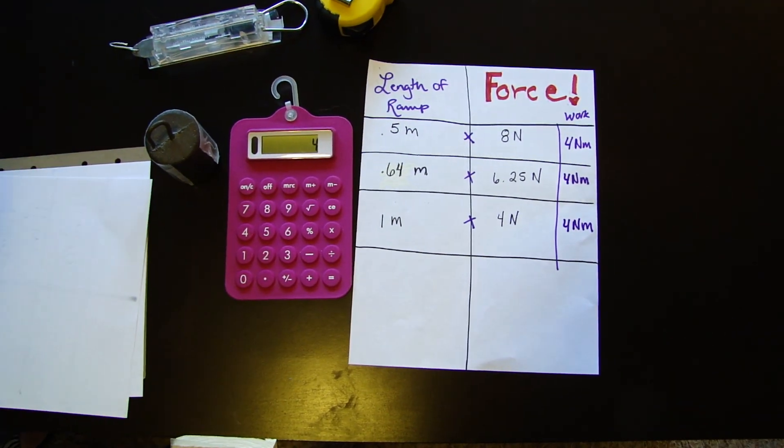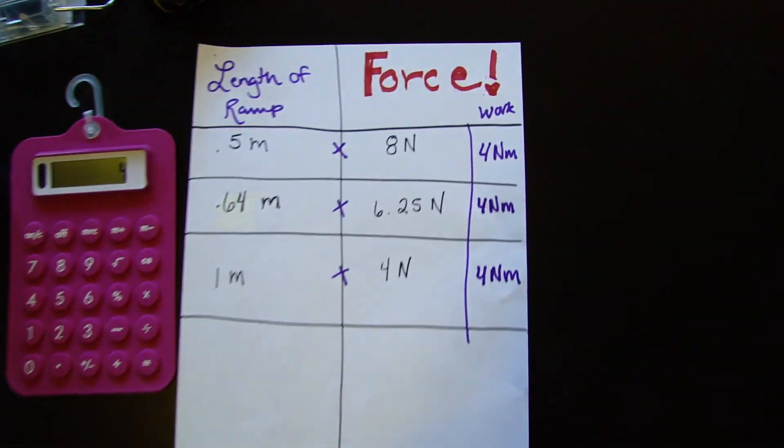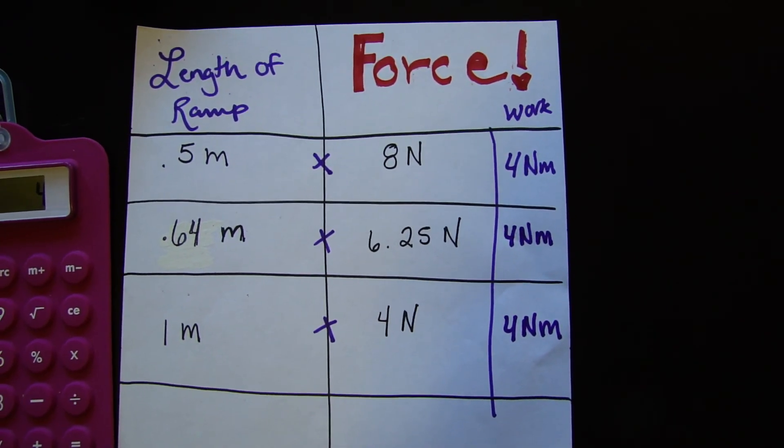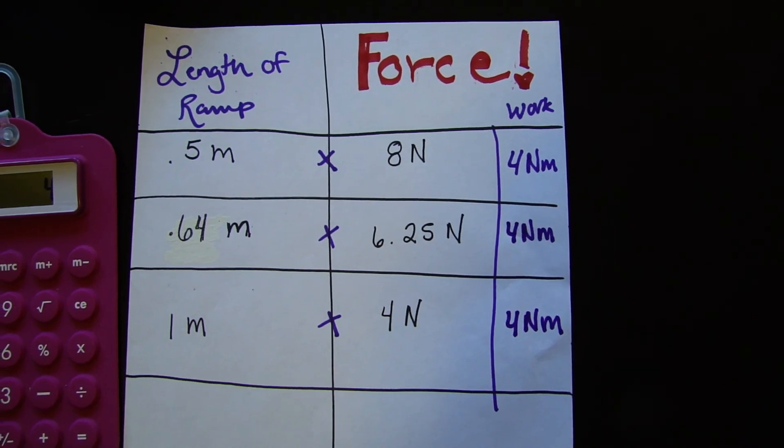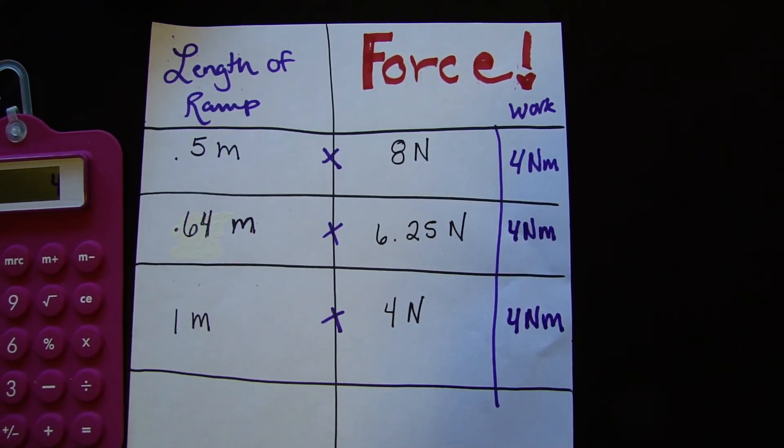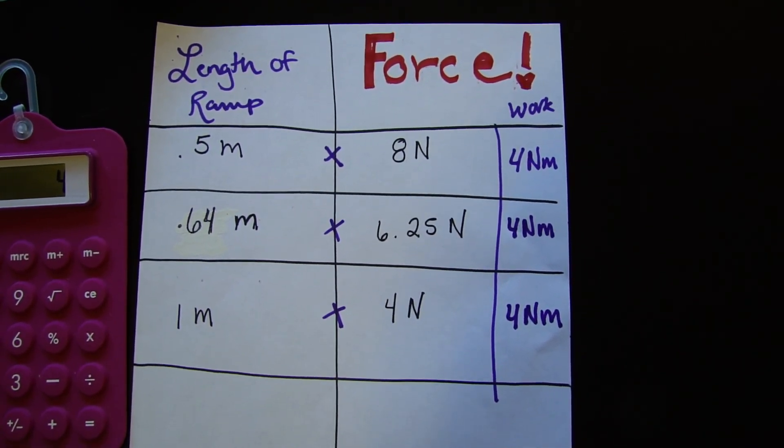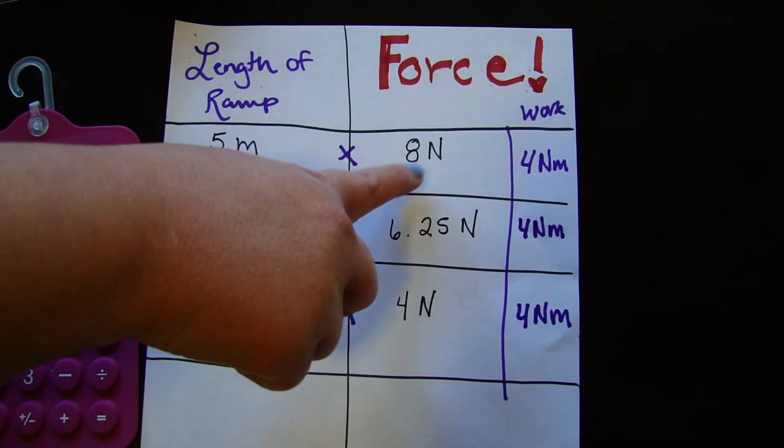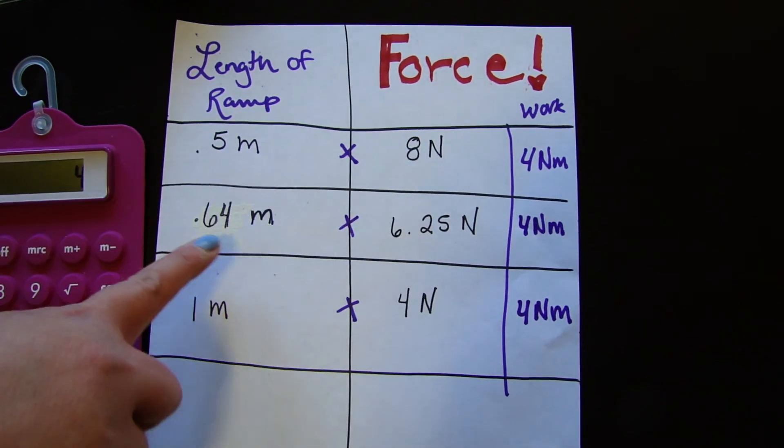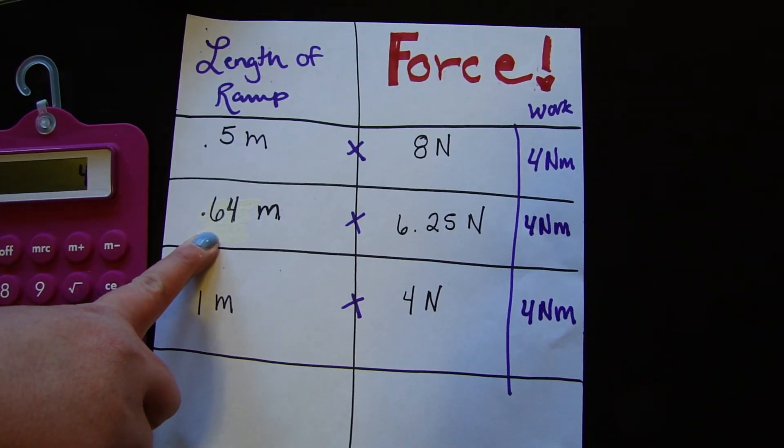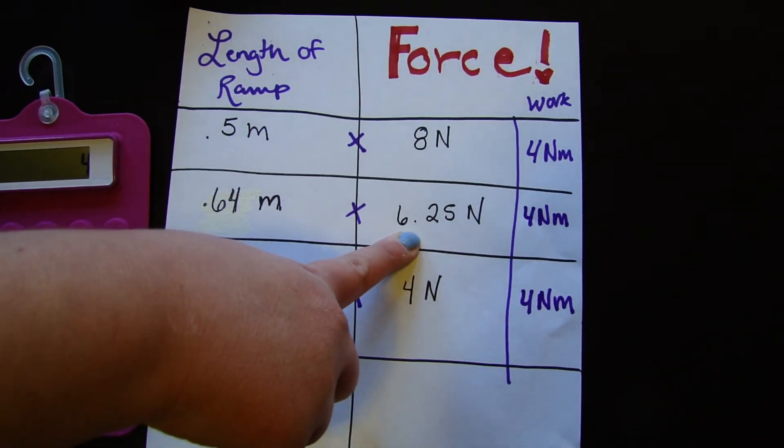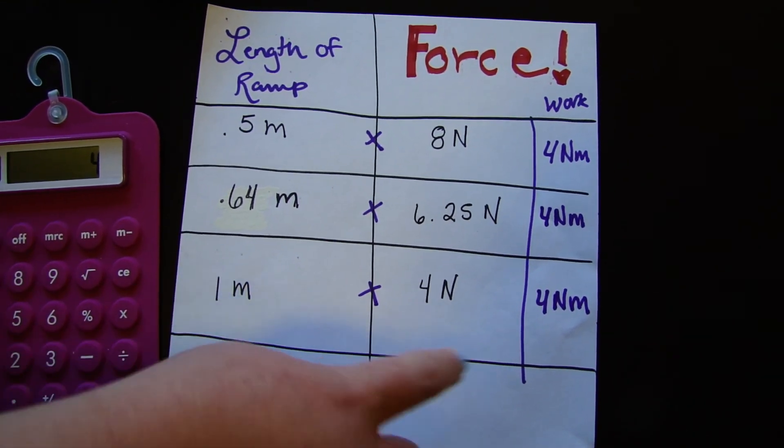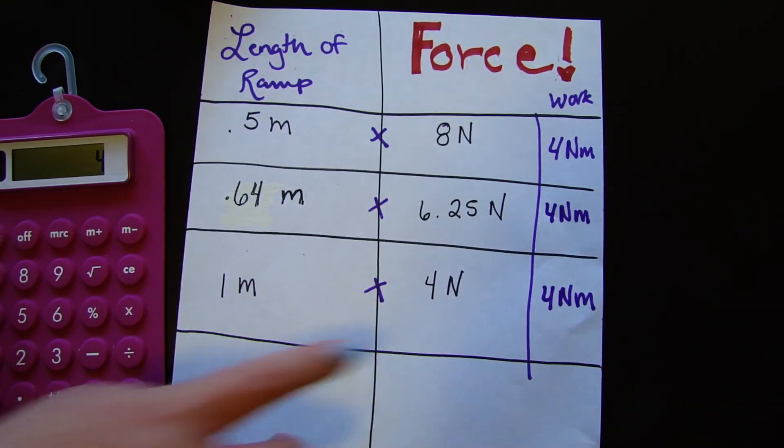So the point of this lab is to show that the length of the ramp affects the amount of force, but it does not affect the amount of work. We're still doing the same amount of work. We have our shortest ramp with our greatest force, our medium ramp here, our middle ramp with the medium force, and our longest ramp with the least amount of force, and it all adds up to 4 joules.